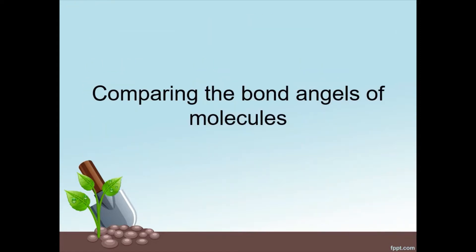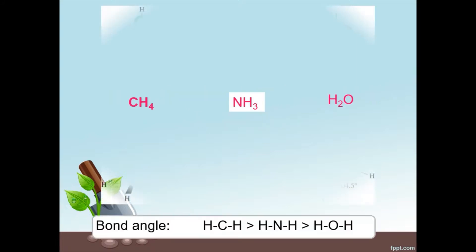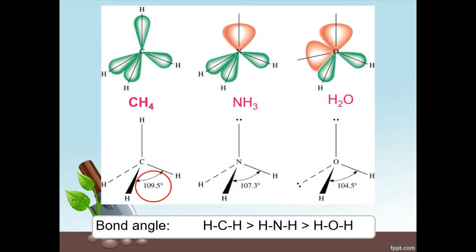Now let's compare the bond angles of molecules that have the same basic structure. Methane CH4, ammonia NH3, and water H2O can be compared because all of them have the same number of electron pairs surrounding the central atom. The bond angle for CH4 is the highest at 109.5 degrees, followed by NH3 at 107.3 degrees, and water has the smallest angle at 104.5 degrees.